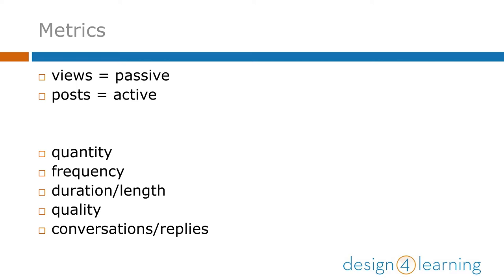Those are easy to measure in most systems. What's harder to measure is quality of interactions — you need to determine your own criteria for that. Some community managers measure conversation threads as a factor of quality. If there's a back and forth between members with more people engaging with the same discussion topic and responding to each other, that's usually a good sign for your community. But you may want to set up a rubric for students to understand better what you're looking for in a high-quality discussion post.